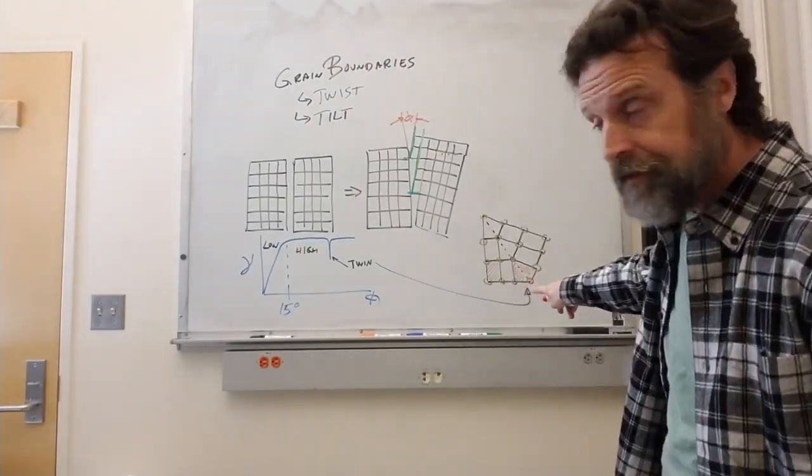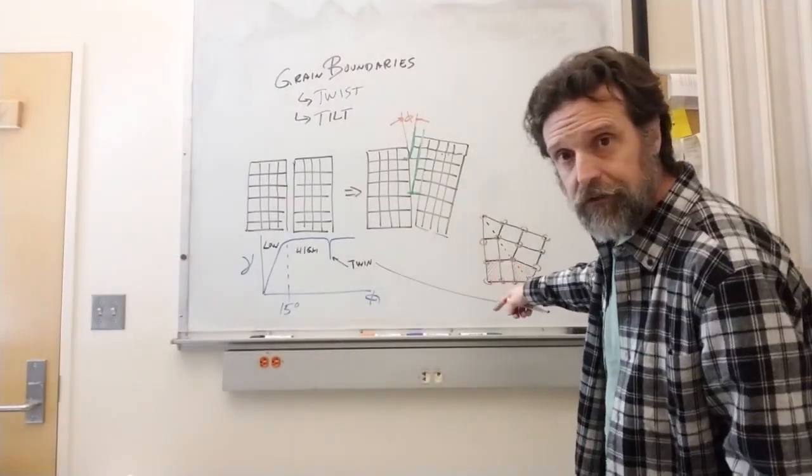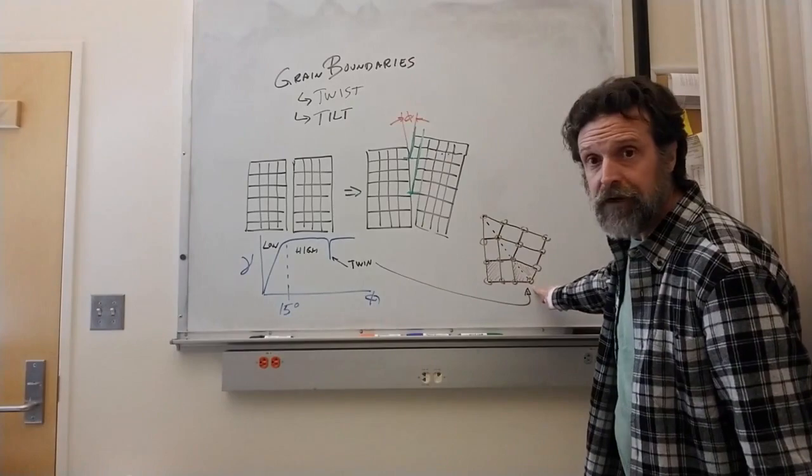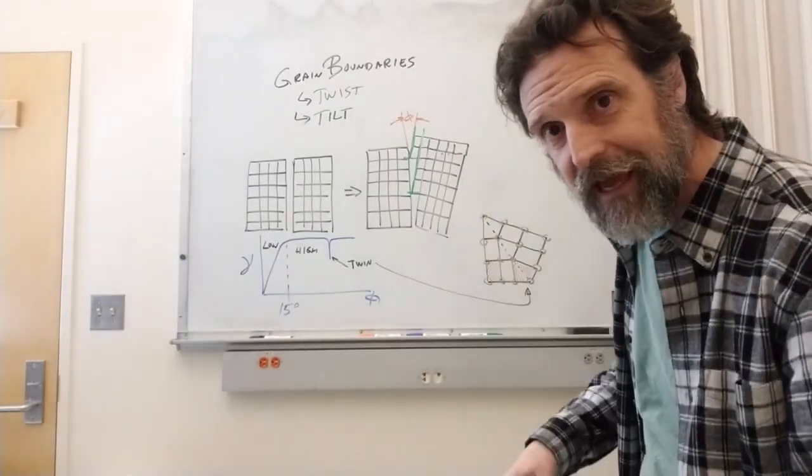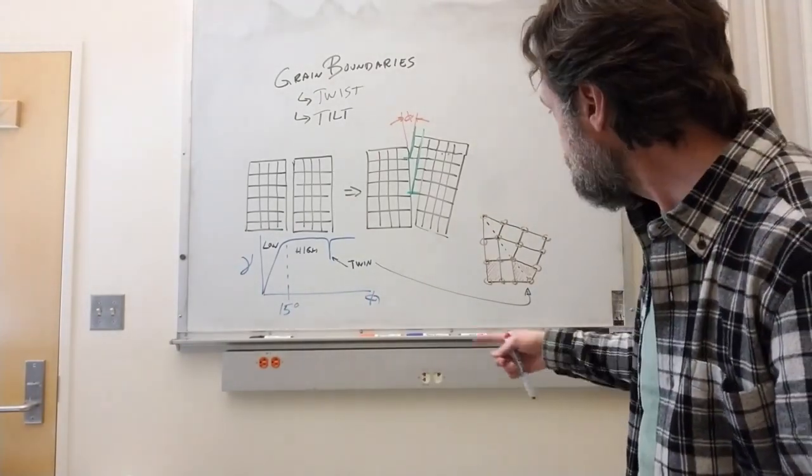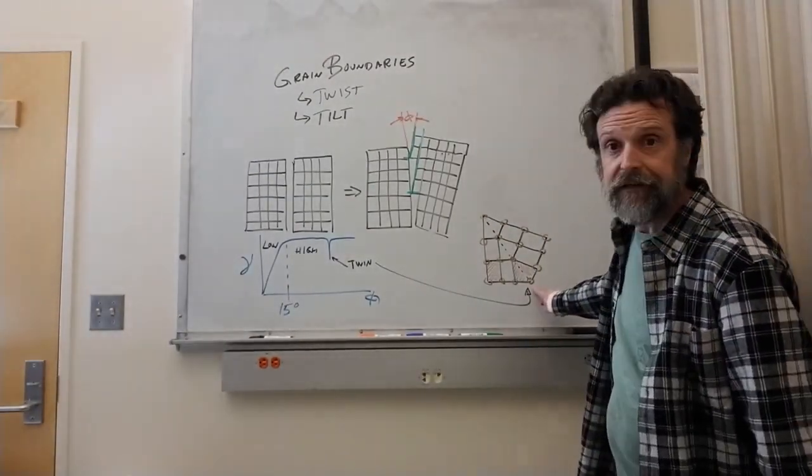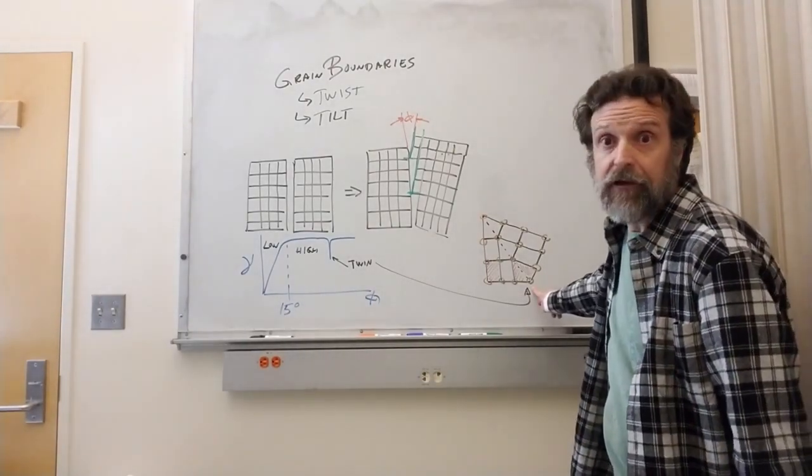The important thing about twins is if you look at it, if we have atoms on the corners of each unit cell, then at the twin boundary all the atoms are still sitting at the interface. There's no broken bonds, which means this boundary has much lower energy than a high angle grain boundary.